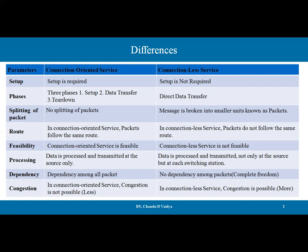The very first parameter is setup. A setup is required in connection-oriented service — before sending any data over the network, we require setting up a fixed path, that is a virtual path. Whereas in connectionless service, the setup is not required.